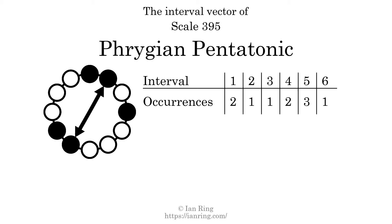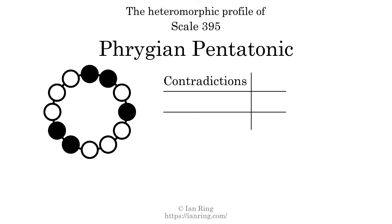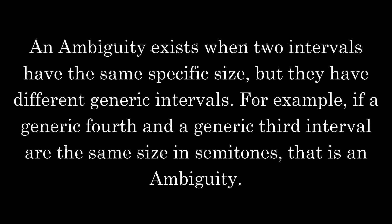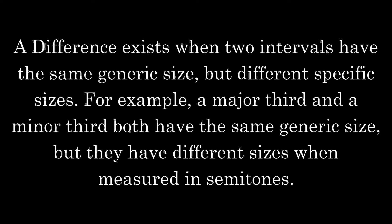Heteromorphisms are comparisons between every interval in a set. They can be classified as contradictions, ambiguities, and differences. A contradiction exists when a small generic interval has a bigger specific size than a larger generic interval — for example, if a generic third interval has a larger size in semitones than a generic fourth interval. The number of contradictions in this scale is four. An ambiguity exists when two intervals have the same specific size but different generic intervals. The number of ambiguities in this scale is one. A difference exists when two intervals have the same generic size but different specific sizes. The number of differences in this scale is 30.